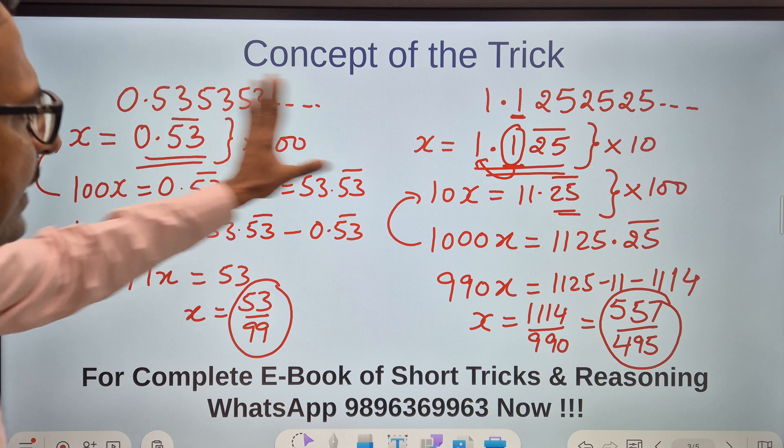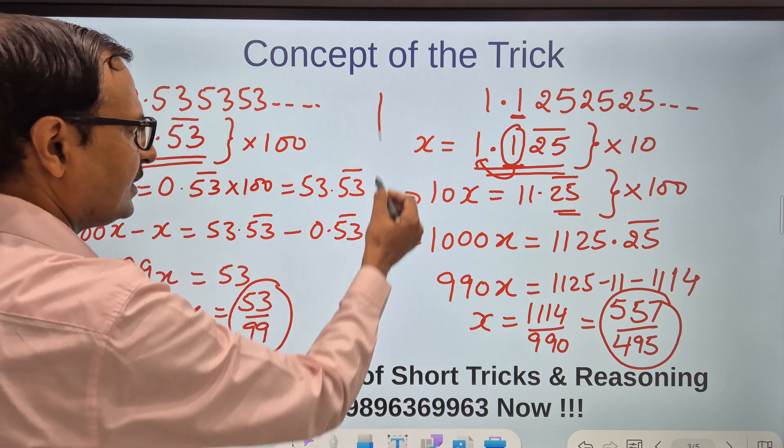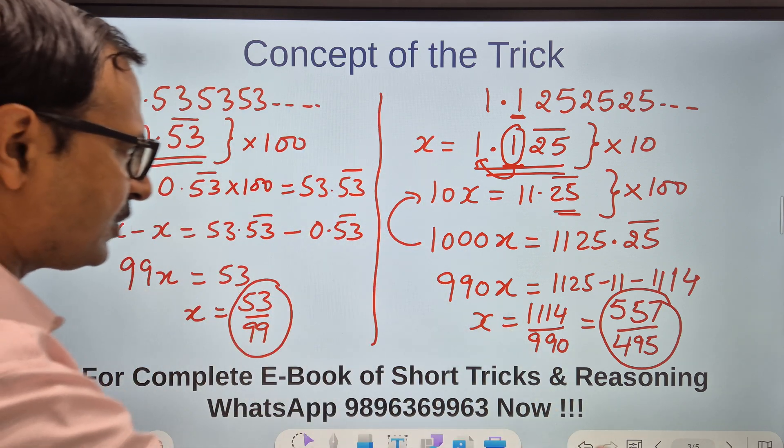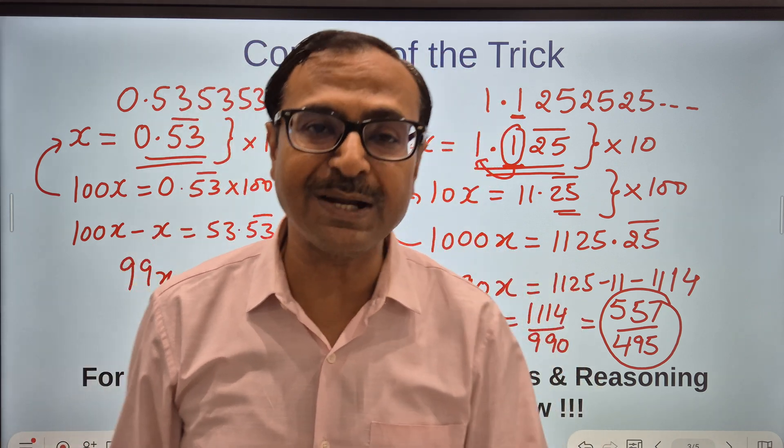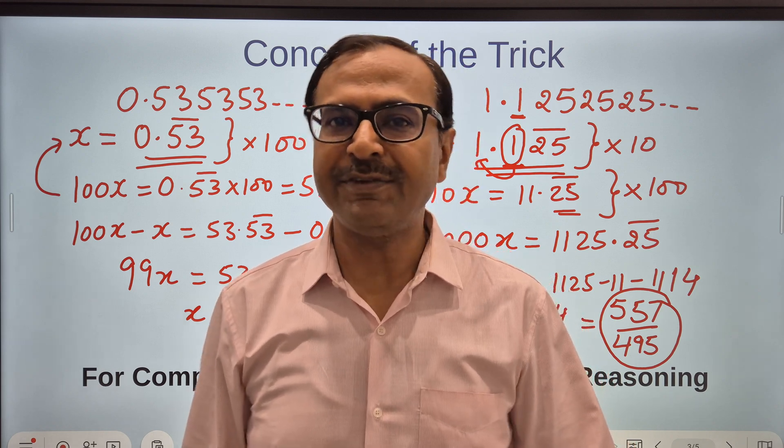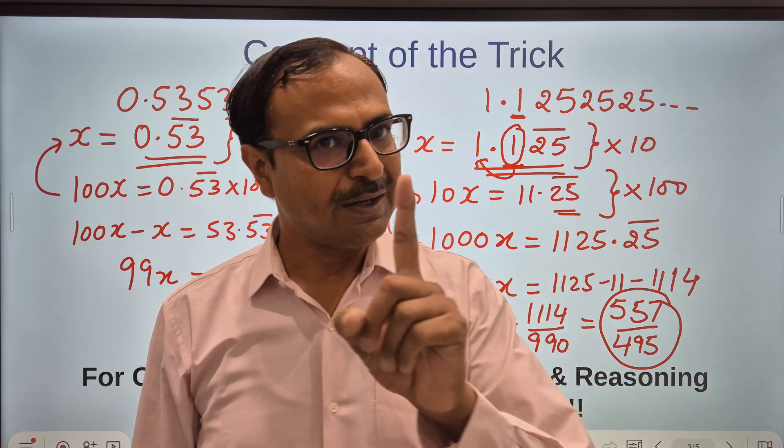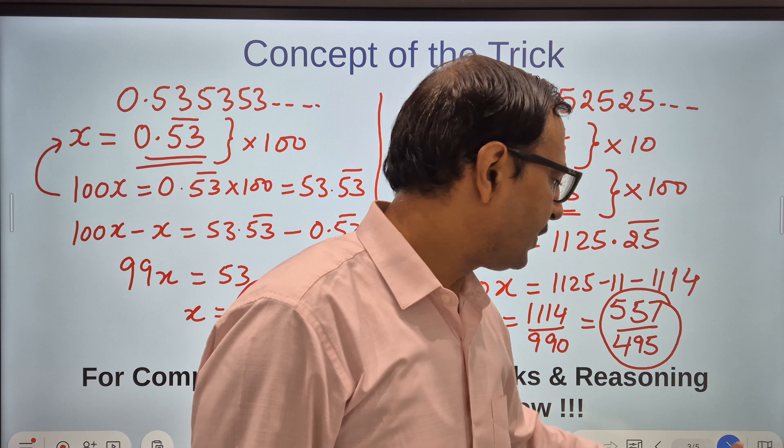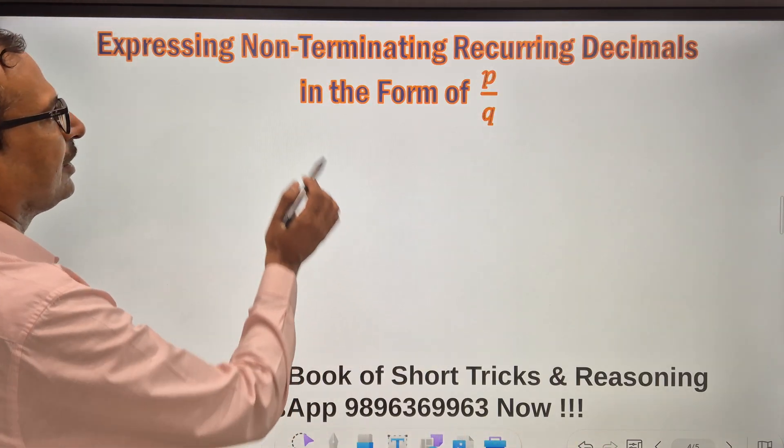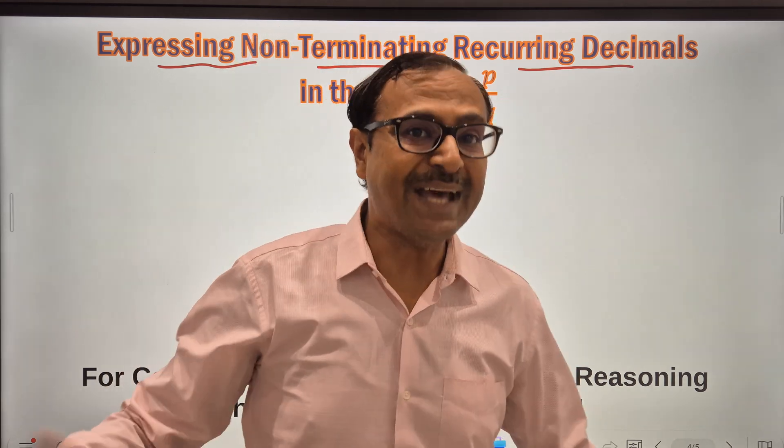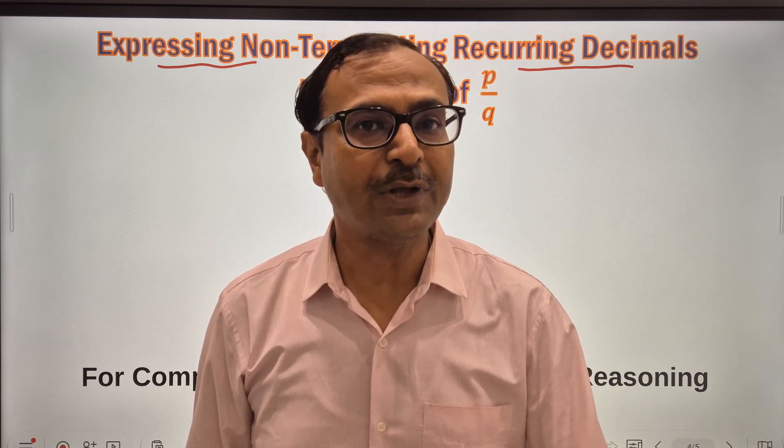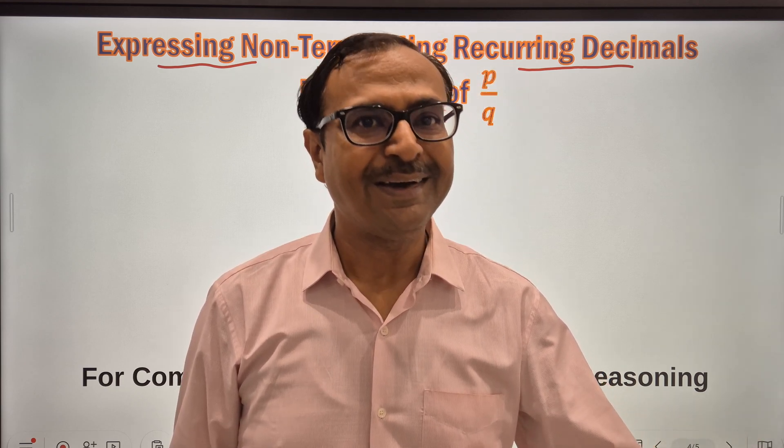So these are the two types of questions and this is how the concept works. I wanted every student to know how the traditional method works, and that is why I have taken two different questions. Now I am going to take up the short trick. Expressing non-terminating recurring decimals in the form of p by q directly, without having to assume it as x or without having to calculate using so many steps.